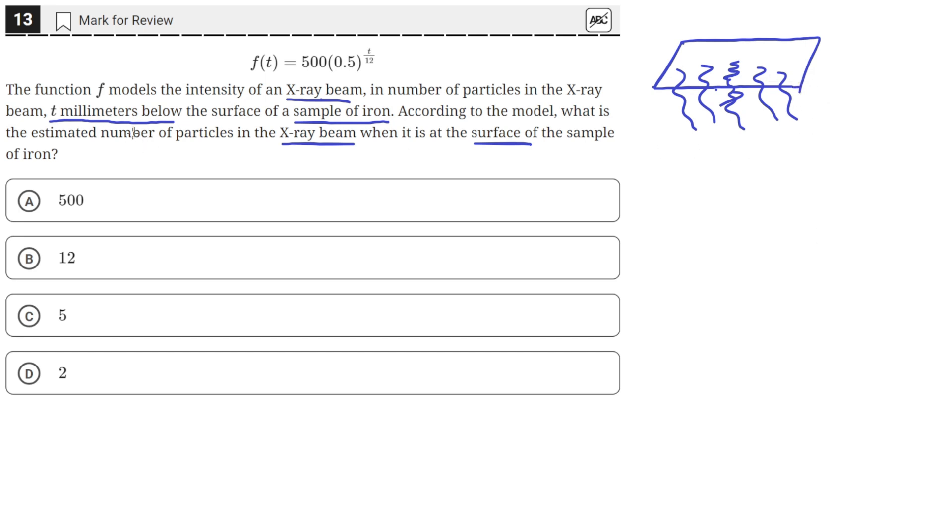But the problem tells us to find the intensity of the beam in number of particles at the surface of the sample of iron. So we're right on the surface.